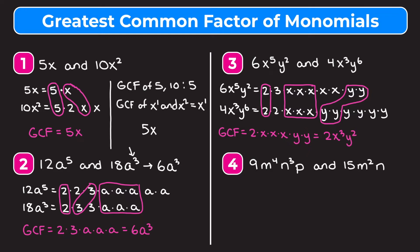The greatest common factor is 2 times those three x's times those two y's. Simplifying: 2, x times x times x is x cubed, y times y is y squared — so we get 2x cubed y squared. Using the shortcut: GCF of 6 and 4 is 2, smallest exponent for x is 3, smallest exponent for y is 2, giving 2x cubed y squared either way.